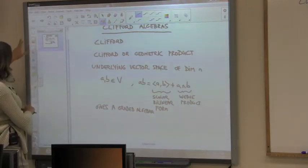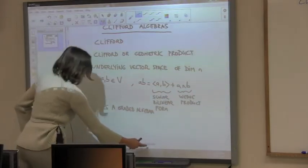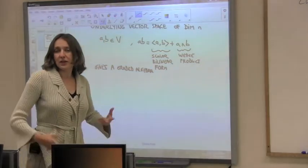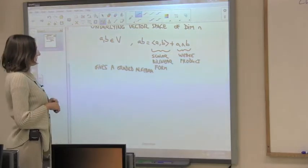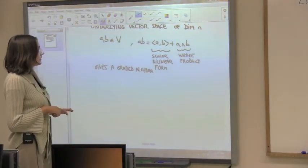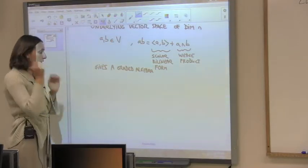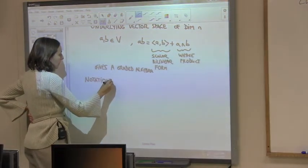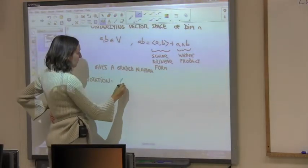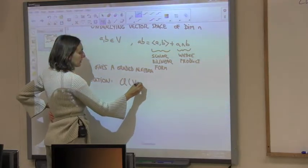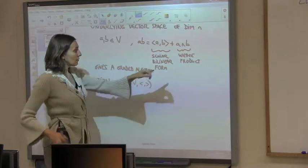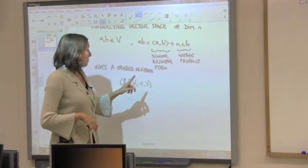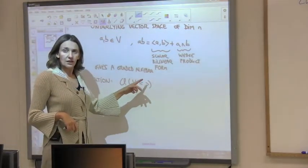The best thing we can do before defining anything else is just do an example, because this may be a little different from what we have seen. Let me tell you the notation for this algebra. We can write the Clifford algebra with the vector space and the scalar product specified. Because the outer wedge product will always be the same — it's just the Grassmann exterior product.